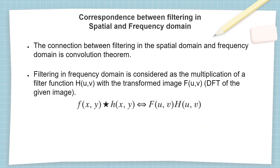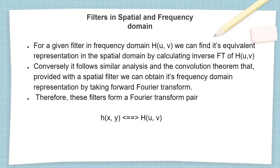The correspondence between filtering in spatial and frequency domain is given by the convolution theorem. In the time domain it is the convolution of the image with the filter, whereas in the frequency domain it is the multiplication of the discrete Fourier transform of the image with the DFT of the filter. For a given filter in the frequency domain H, we can find its equivalent representation in the spatial domain by calculating the inverse Fourier transform of H, and vice versa. Therefore these filters form a Fourier transform pair.